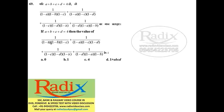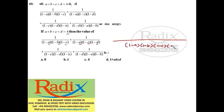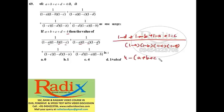Question 69: Given a + b + c + d = 4, find the value of the expression. The numerator simplifies to 4 − (a + b + c + d) = 4 − 4 = 0. So the answer is always 0.